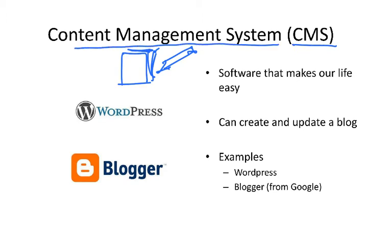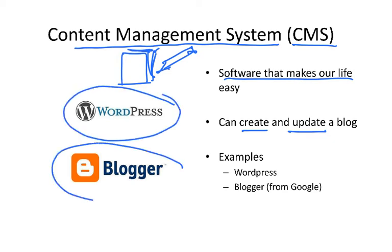A CMS can be defined as software that makes our life easy — the same as we do with email, where we open an account and then send and receive emails. Something similar, and not much more complicated, happens with a blog. Once it's open, you can update it or create information. Two examples of Content Management Systems are WordPress and Blogger, which is a Google tool.